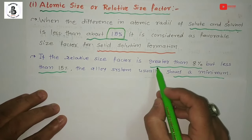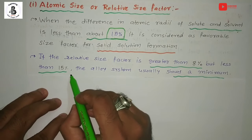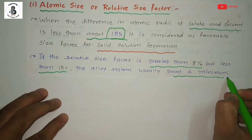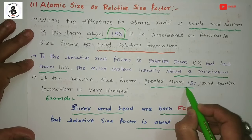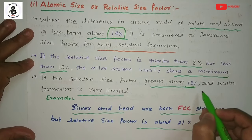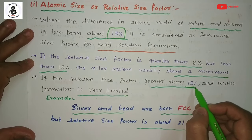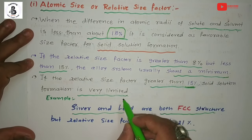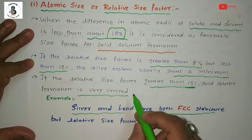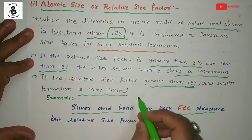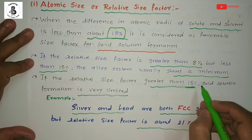If the relative size factor is greater than 8% but less than 15%, the alloy system usually shows a minimum and can still form new materials. If the relative size factor is greater than 15%, solid solution formation is very limited and there will be difficulties in forming new solid solution materials. So up to 15% is the most favorable size range; more than 15% creates increasing difficulty.